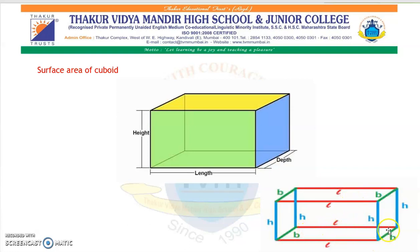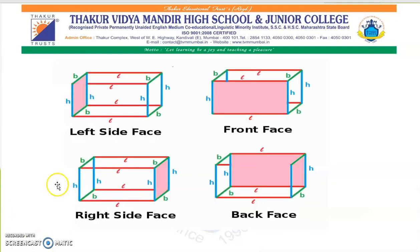L is given as length, B is the breadth, and in the blue figure, H is the height. You can easily observe: this is the length of the cuboid, this is the height, and this is the depth, meaning the base. The darker part is the front face, the pink part is the back face, and this is the right side face.